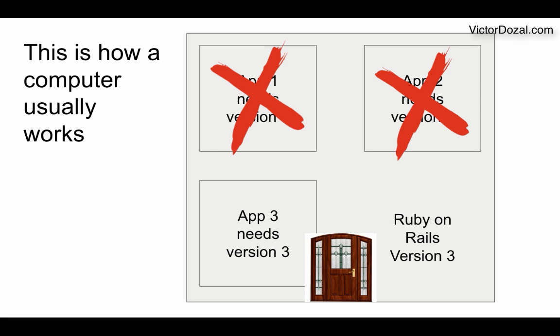If the Ruby on Rails framework installed on our computer is version 3, then applications 1 and 2 would stop working because they need a different version. Application 3 would still work because our computer is using the correct version. So, how do we fix this? How do we get all three of our applications to work?